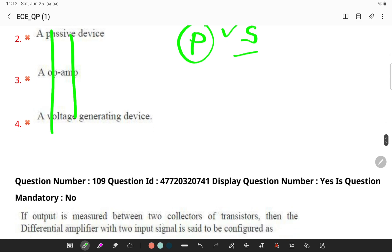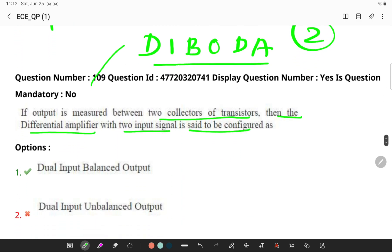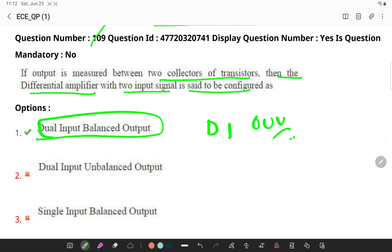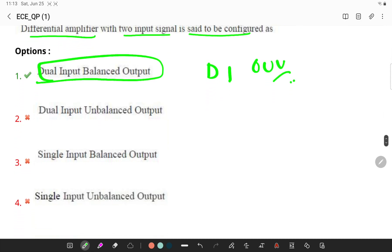Next, if output is measured between two collectors of a transistor, then the differential amplifier with two input signals is said to be configured as - remember, in a dual input balanced output differential amplifier, we will be having two signals and the configuration is said to be dual input and output voltage which is measured between the two collectors. I can simply say dual input balanced output.